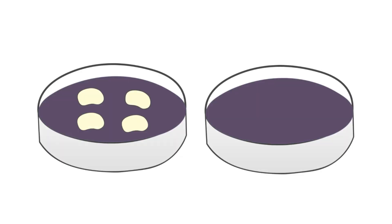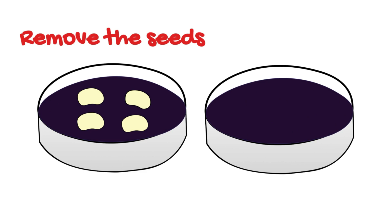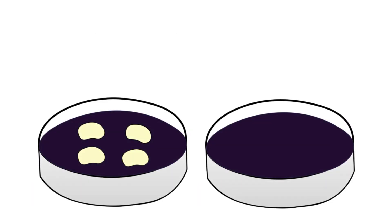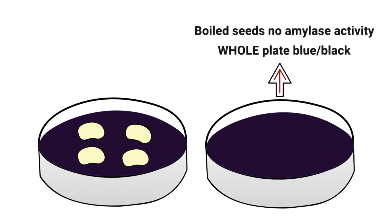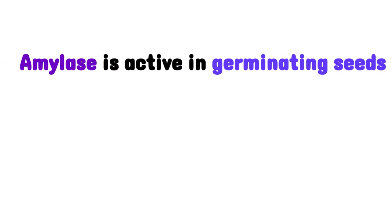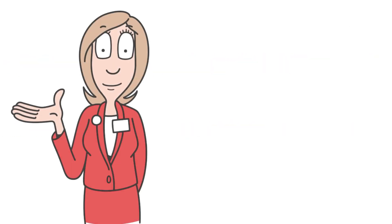Starch is the nutrient. You should have two plates — one with the boiled seeds and one with the unboiled seeds. They are sealed and placed in an incubator for 48 hours at 25 degrees Celsius. After that 48 hours, the plates were removed, opened, and the seeds were removed. Both plates were flooded with iodine solution. Results: in the boiled seeds, the whole plate turned blue-black, indicating absolutely no amylase enzyme activity. In the plate that had contained the unboiled seeds, there were light patches where the seeds had been positioned, indicating there was no longer starch there — amylase had acted on the starch and converted it to maltose. So amylase is active in germinating seeds and breaks down starch into maltose.